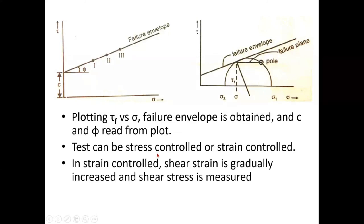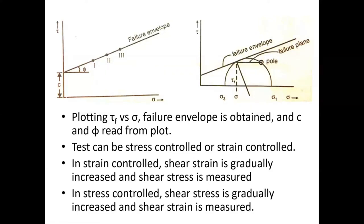This test can be stress controlled or strain controlled. In strain control, the shear strain is gradually increased and shear stress is measured. In stress control, shear stress is gradually increased and shear strain is measured. You can go to Ample and watch the video to understand how this test is done and the failure envelope is plotted — as we would normally be doing this experiment in the lab.